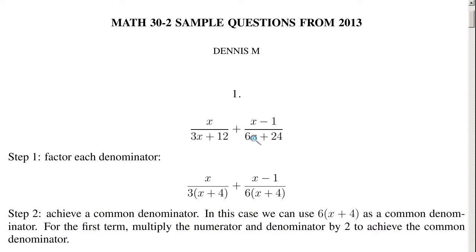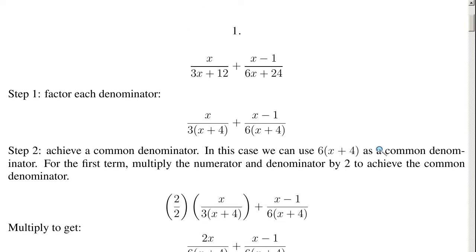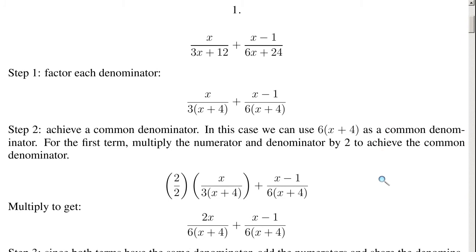I copied it over here: x over 3x plus 12 plus x minus 1 over 6x plus 24. Step 1: factor each denominator, because we want to make it as simple as possible. So 3x plus 12 factors to 3 times (x plus 4), and then 6x plus 24 factors to 6 times (x plus 4).